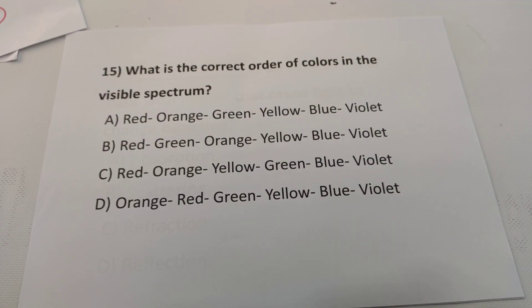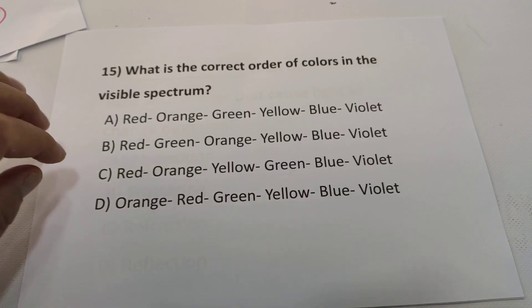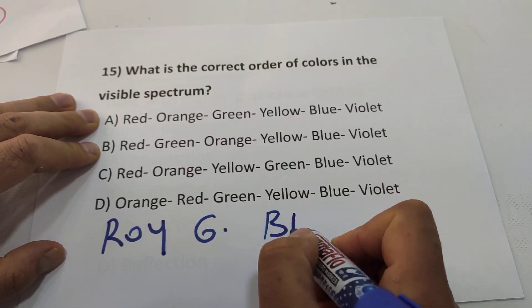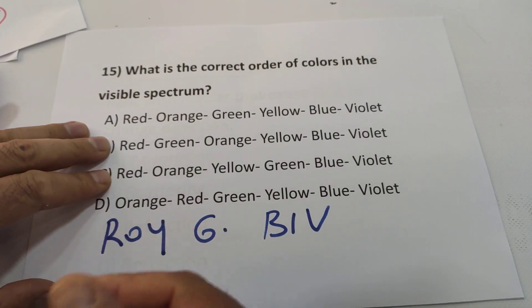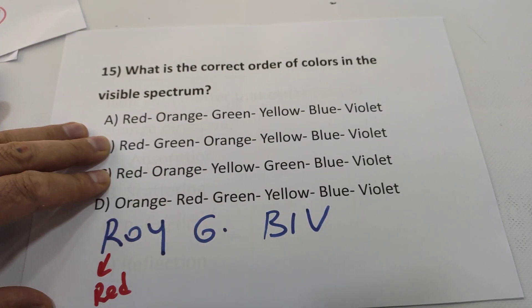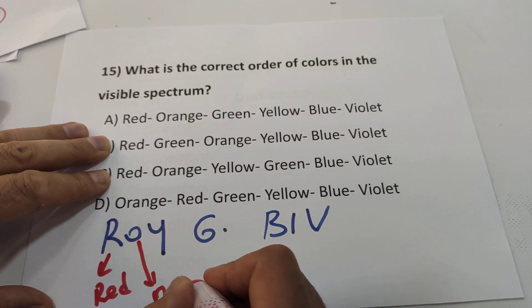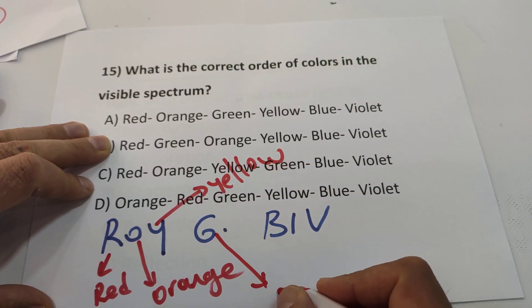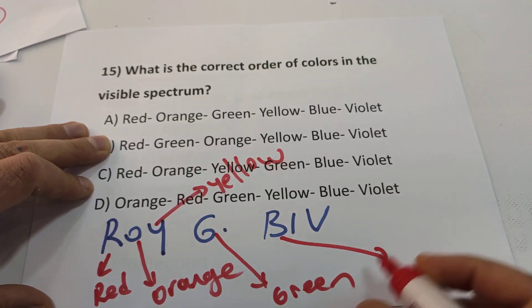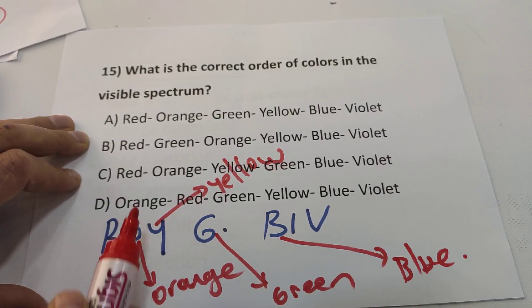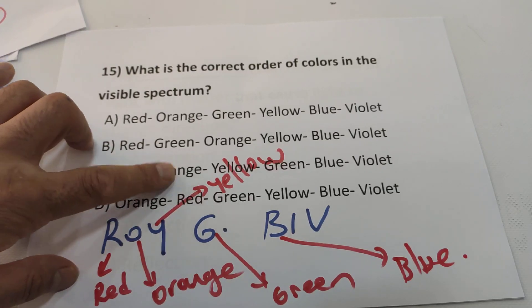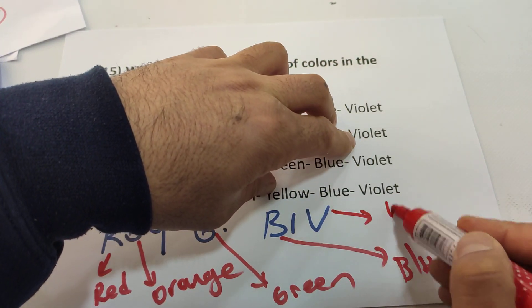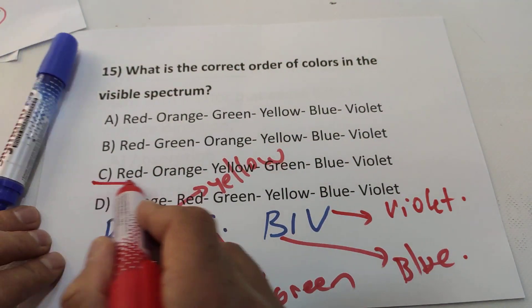Question 15: What is the correct order of colors in the visible spectrum? Remember ROYGBIV — red, orange, yellow, green, blue, indigo, violet. Checking the options against this order, the answer will be C.